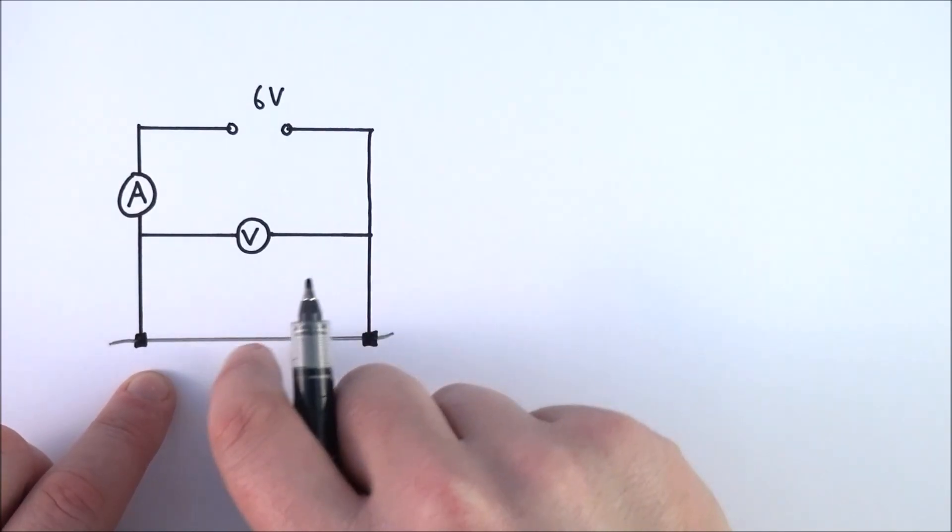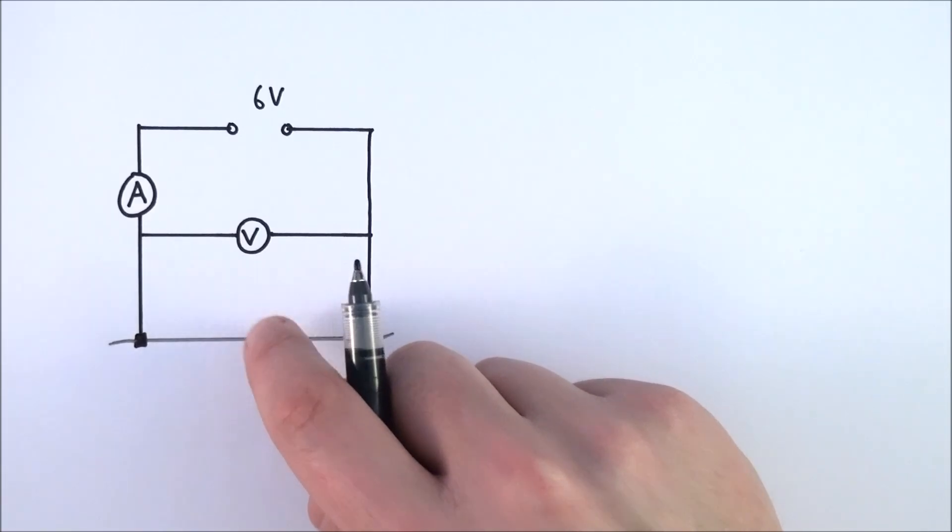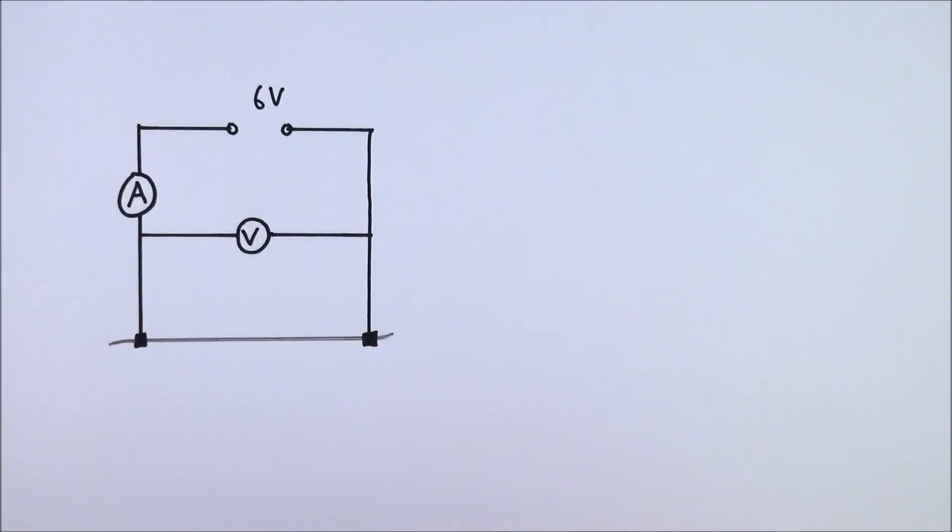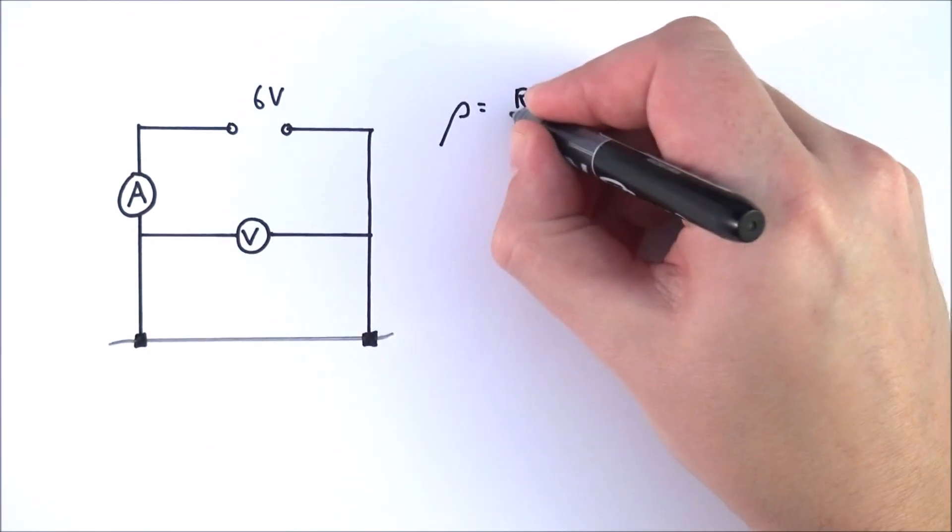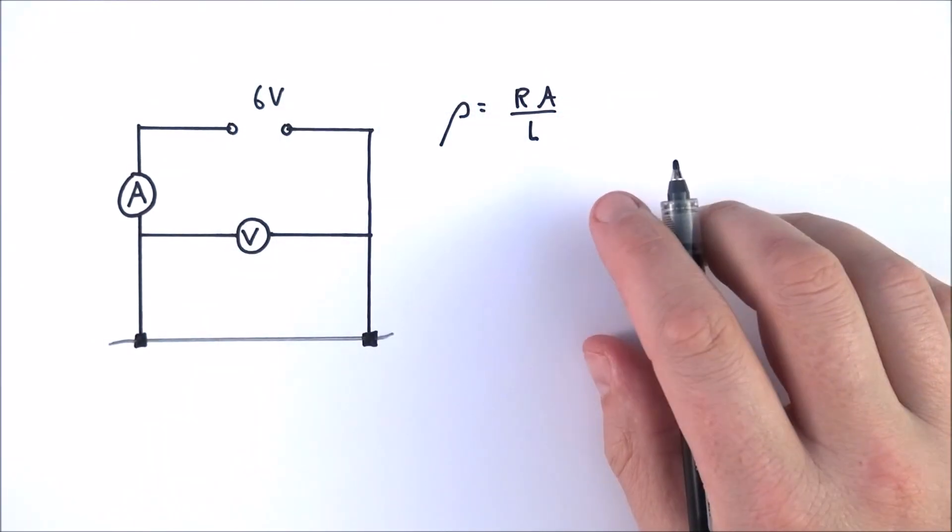You're going to be measuring the resistance in order to work out the resistivity of constantin. You should recall that resistivity is equal to RA over L, and therefore there's some measurements that you need to take.